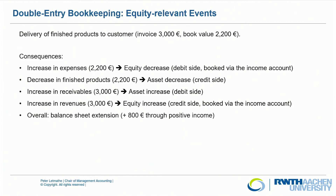Let's look at another similar event. We deliver a finished product to our customer and invoice 3,000 euro; the book value of the finished product is 2,200 euro. The consequences include an increase in expense, which means an equity decrease because an expense reduces equity, booked via the income account. We have an expense for finished products and a decrease in finished products by the same value — 2,200 euro — so finished products, being on the asset side, the decrease is booked on the credit side.